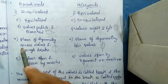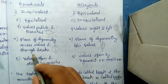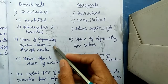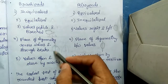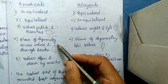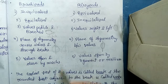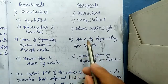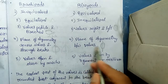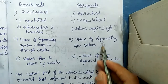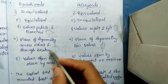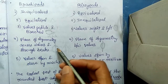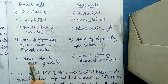The fourth difference is the plane of symmetry. In Brachiopoda, the plane of symmetry passes through the beaks and bisects each valve, so the two halves of a single valve are mirror images of each other. In Pelecypoda, the plane of symmetry passes between the two valves — the left and right valves are mirror images of each other.